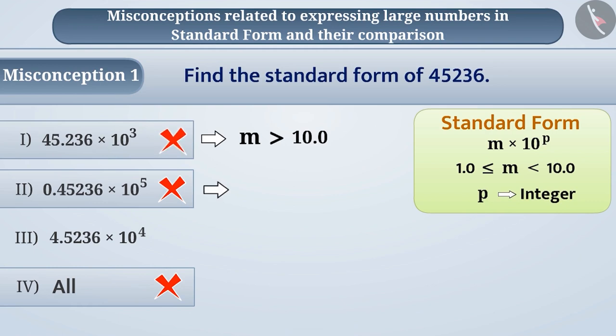In option 2, the value of m is smaller than 1.0, so it cannot be the standard form.